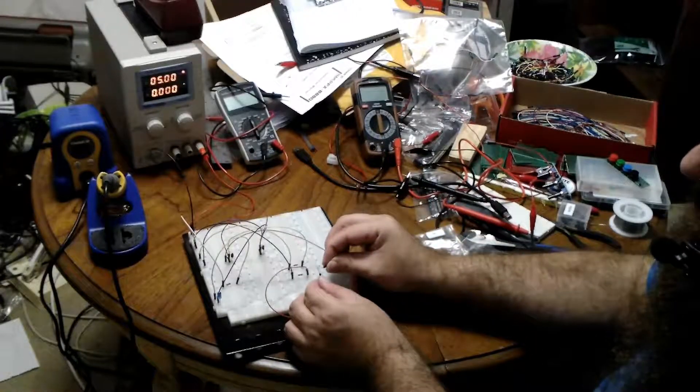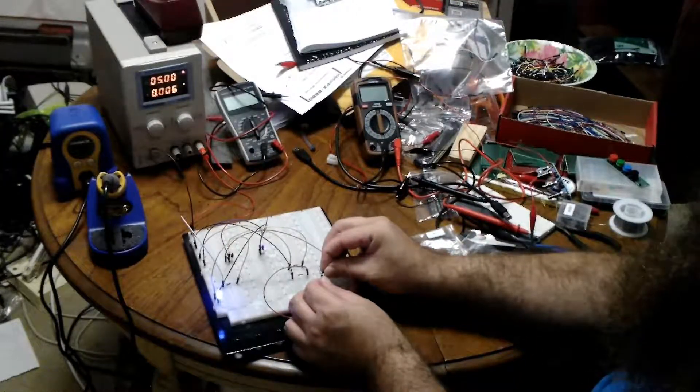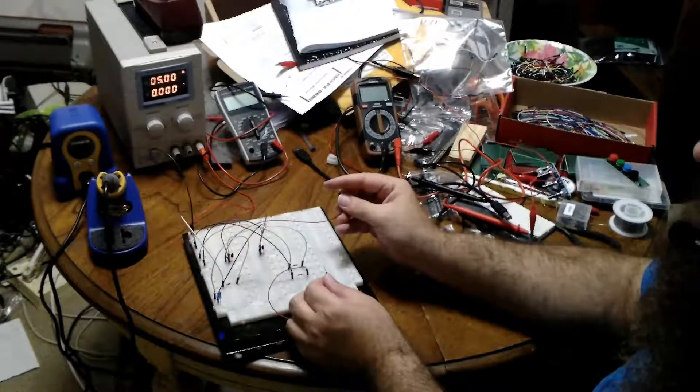But now, of course, if we short the switch, we get 6 milliamps. If I just touch it, we're getting 1 or less than 1. If I short the switch, like it was a real button, we get 6. So now we know our maximum draw.